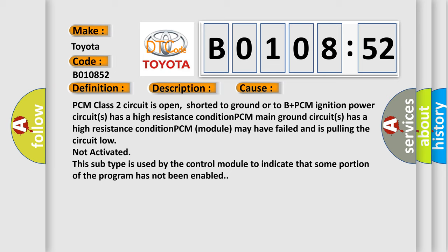PCM ignition power circuits has a high resistance condition. PCM main ground circuits has a high resistance condition. PCM module may have failed and is pulling the circuit low. Not Activated: This subtype is used by the control module to indicate that some portion of the program has not been enabled.